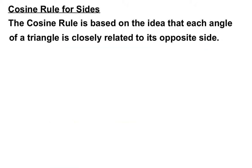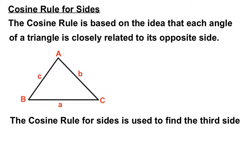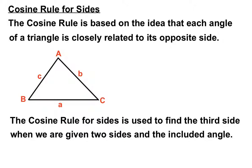So, just to recap, the cosine rule is based on that whole idea of triangles, that each angle is closely related to its opposite side, and it's used to find the third side when we're given two sides and the included angle.